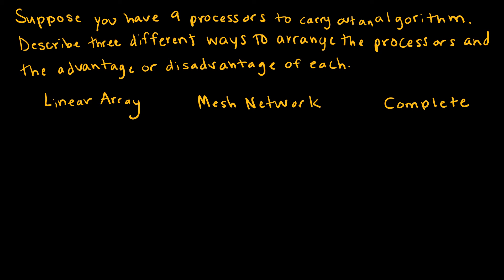So sort of continuing along that train of thought, now I have nine processors. I want to carry out some sort of algorithm, describe the different ways I can arrange the processors and the advantages or disadvantages of each. So obviously, I could do a linear array, four, five, six, seven, eight, nine. And a linear array, obviously, is just everything in a straight line. Now, does this work? Of course. But it sucks for these people at the end, because if it starts down here, it's going to take a really long time to get down here.